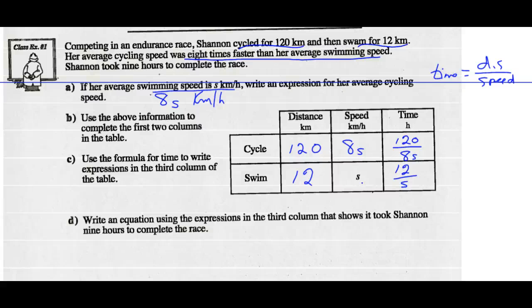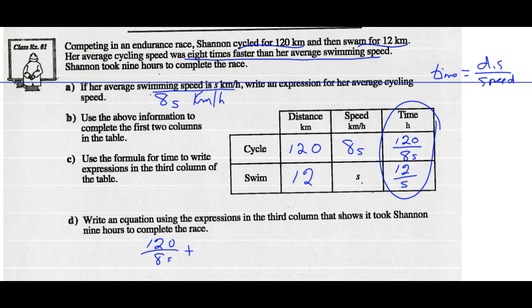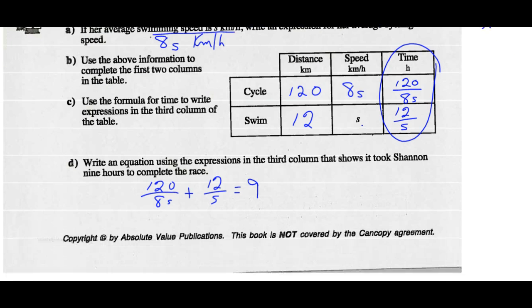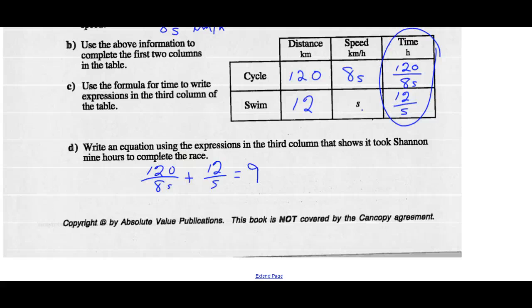Part D says write an equation using the expressions in the third column that shows it took Shannon nine hours to complete the race. This is the time column. If it took her nine hours, the time to cycle — 120 over 8S — plus the time to swim — 12 over S — should equal nine hours. We can simplify: 120 divided by 8 is 15, and 8S divided by 8 is just S. So 15 over S plus 12 over S equals nine.